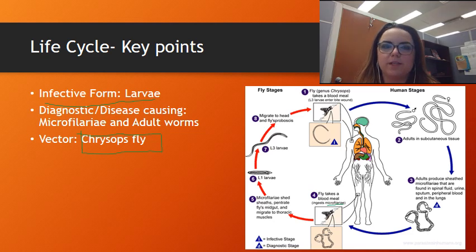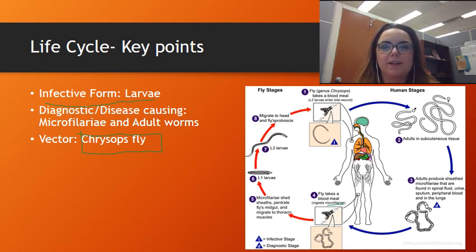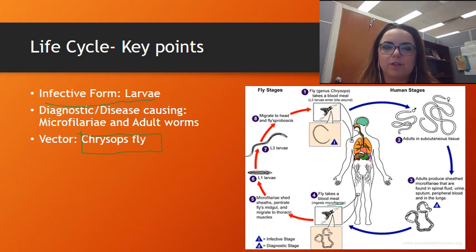So the take-home points: the larvae are the infective form; the diagnostic or disease-causing form is your microfilariae or your adult worms; and how do you get it? Bites of the chrysops fly.